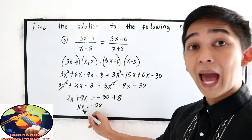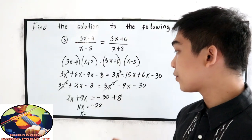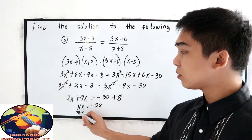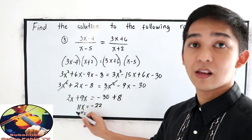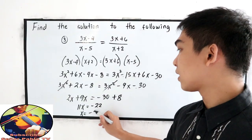Get the value for x. So x is equal to negative 22 divided by 11. So negative 2.